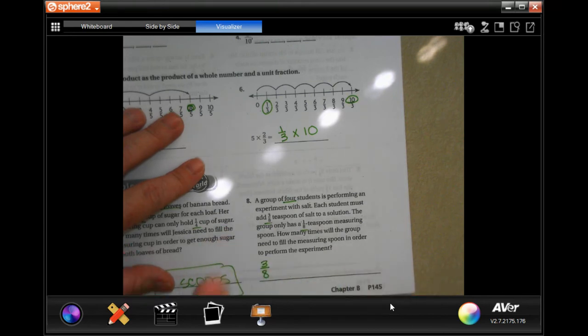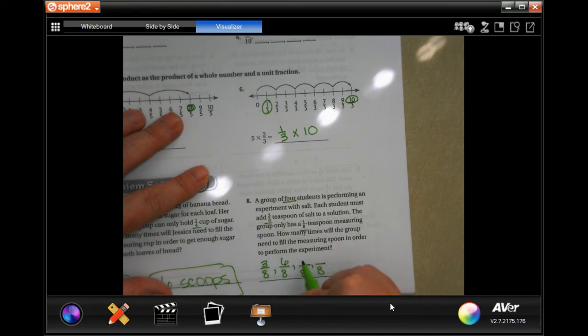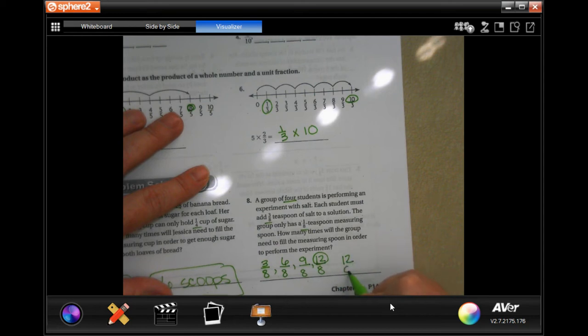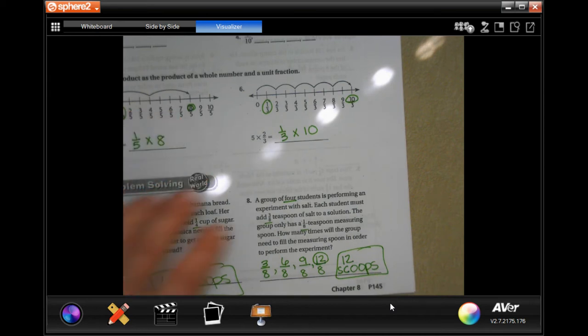Okay, four times. So three eighths, we're gonna keep the same denominator each time, right? So three plus three is six, plus three is nine, plus three is twelve. Twelve scoops.